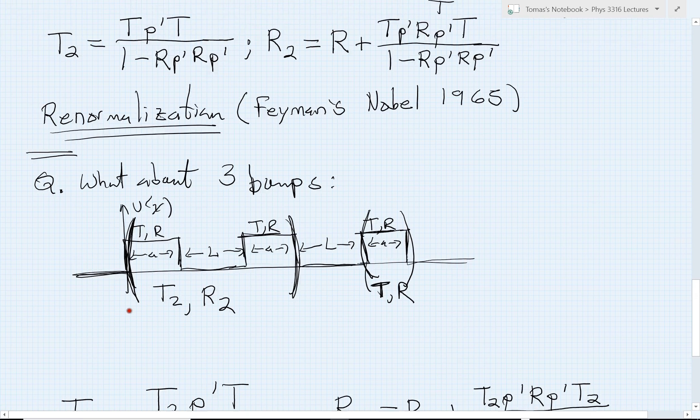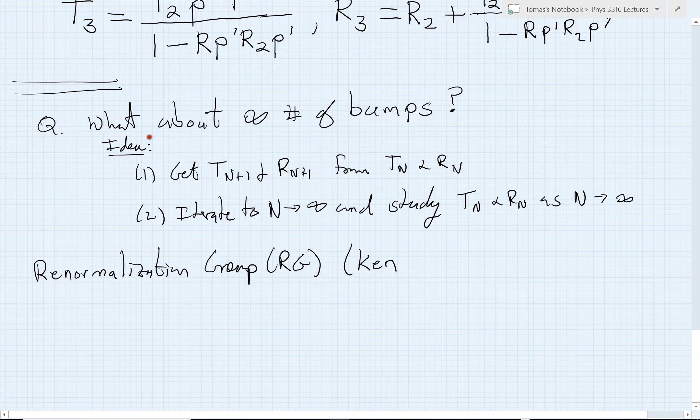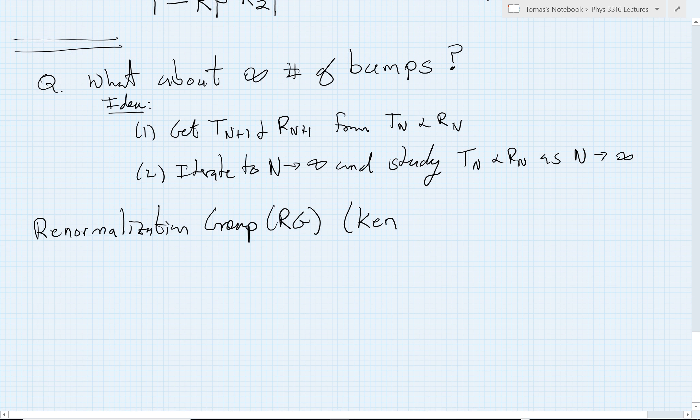as you guys probably may remember, was an assistant professor here at Cornell for a little while before the war. Now, Ken Wilson is another very important Cornellian, and he won the Nobel Prize for this renormalization group idea in 1982.